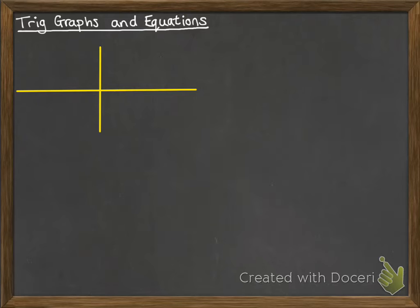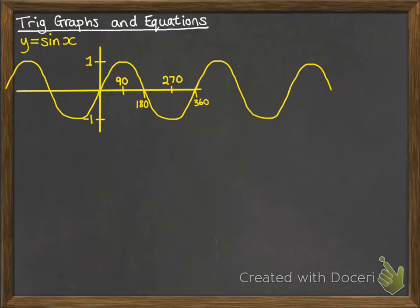So first of all, let's have a look at what those graphs look like. If we draw the graph of y equals sine x, it looks like this and that then gets repeated. This goes through the x-axis at 180 and 360. It has a maximum of 1 and a minimum of minus 1, with that point there at 90 and 270. This graph is symmetrical and repeats, so it carries on to infinity in both directions.